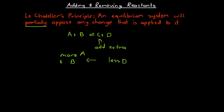It will partially get rid of the extra substance C that's been added, but it won't get rid of all of it. For example, if we add one mole of substance C, then half a mole of that might get used up in the back reaction, and half a mole of D will also be used up. But we'll still end up with half a mole more C than we started with — more C than we had before we added anything.